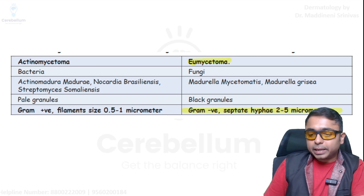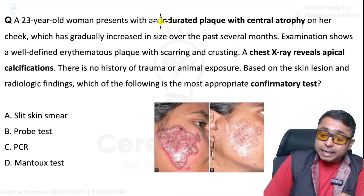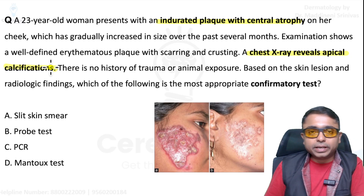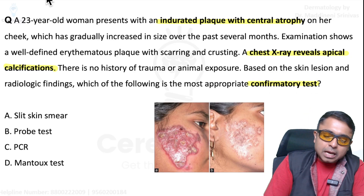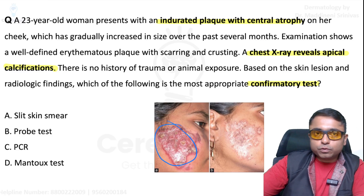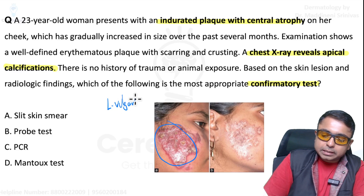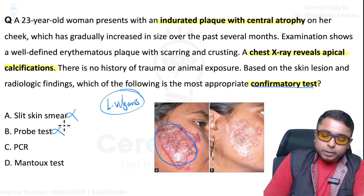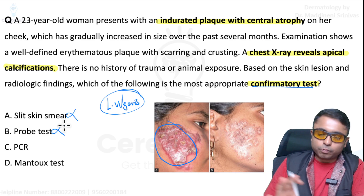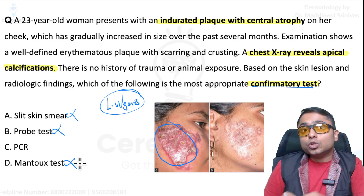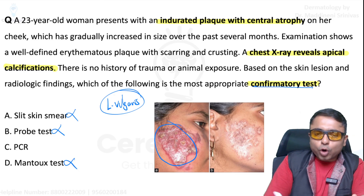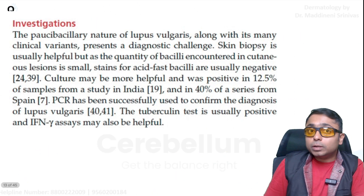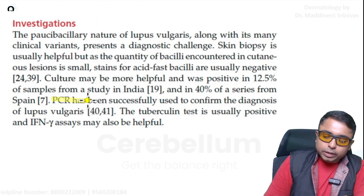Next question: indurated plaque with central atrophy or scarring on the cheek, and chest X-ray showing apical calcifications. The examiner is asking for the confirmatory test. With the clinical picture and buzzword clues, you might think of lupus vulgaris. Remember, slit skin smear and probe test are not useful in cutaneous tuberculosis. Mantoux test does not confirm the diagnosis either. The best option would be biopsy, but since it was not in the options, the next best is PCR — polymerase chain reaction — as confirmed in Rook's textbook.